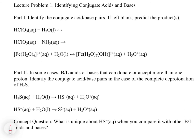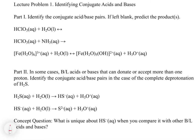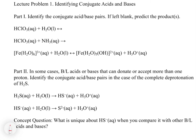Let's take a look at some examples where we write out acid-base equilibria. The instructions say: identify the conjugate acid-base pairs, or if left blank, predict the products. Looking at the first one: we have HClO3 and water. HClO3 is a weak acid, so when we write the acid-base equation, we're going to have the proton transferred from HClO3 to water. What we get is ClO3-(aq) and H3O+(aq).